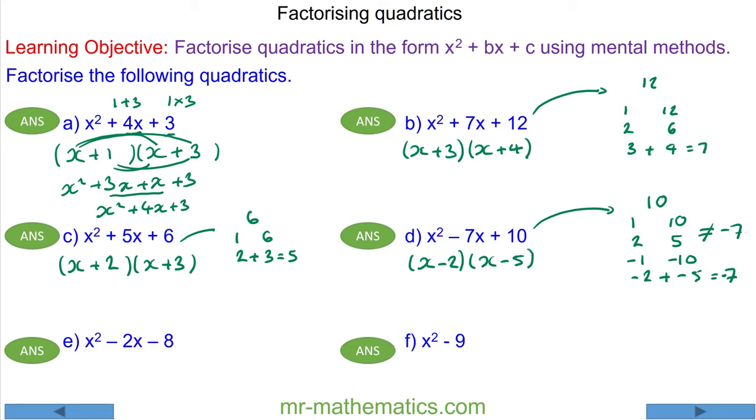For question E, we need two numbers that multiply to make negative 8, which are negative 1 and positive 8, negative 2 and positive 4. We could also have 1 and negative 8, and 2 and negative 4. Now only 2 and negative 4 will add to make the value of b which is negative 2. So in brackets we have x plus 2 and x minus 4.